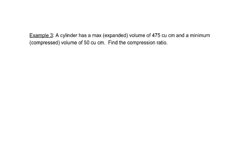A cylinder has a max, or expanded volume, of 475 cubic centimeters, and a minimum, or compressed volume, of 50 cubic centimeters. Find the compression ratio. Now remember that the compression ratio is always the bigger one to the smaller, or expanded to compressed.